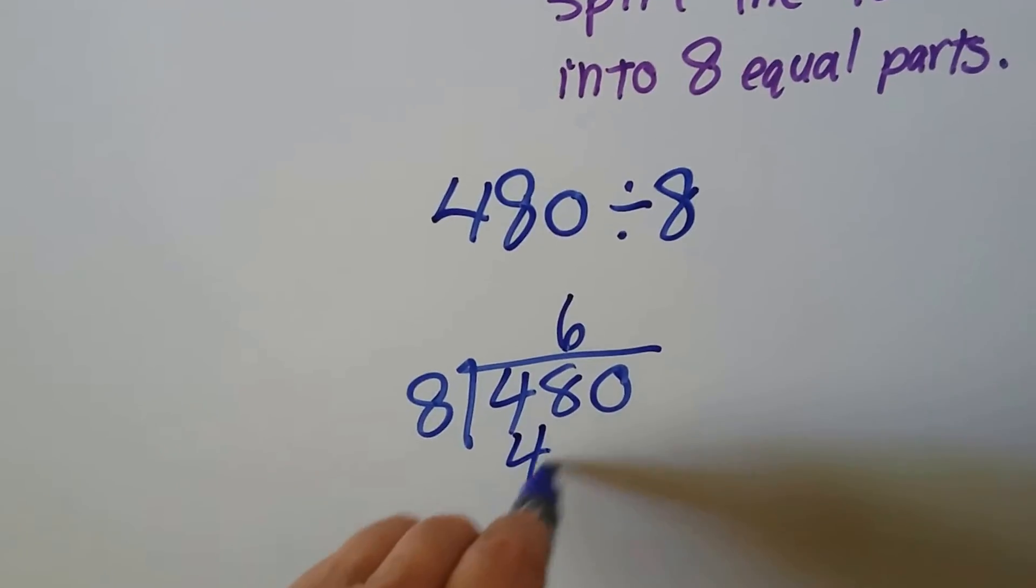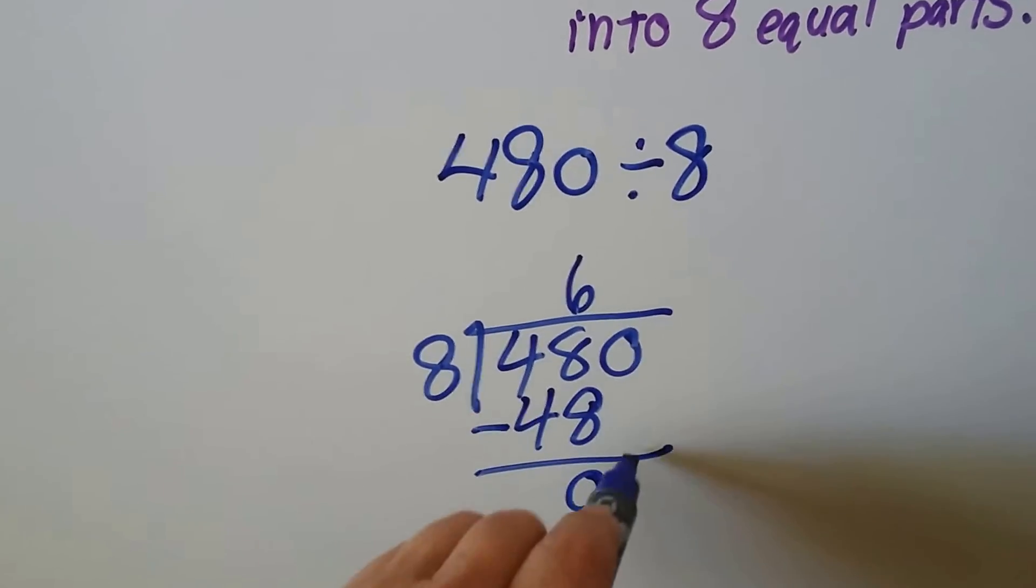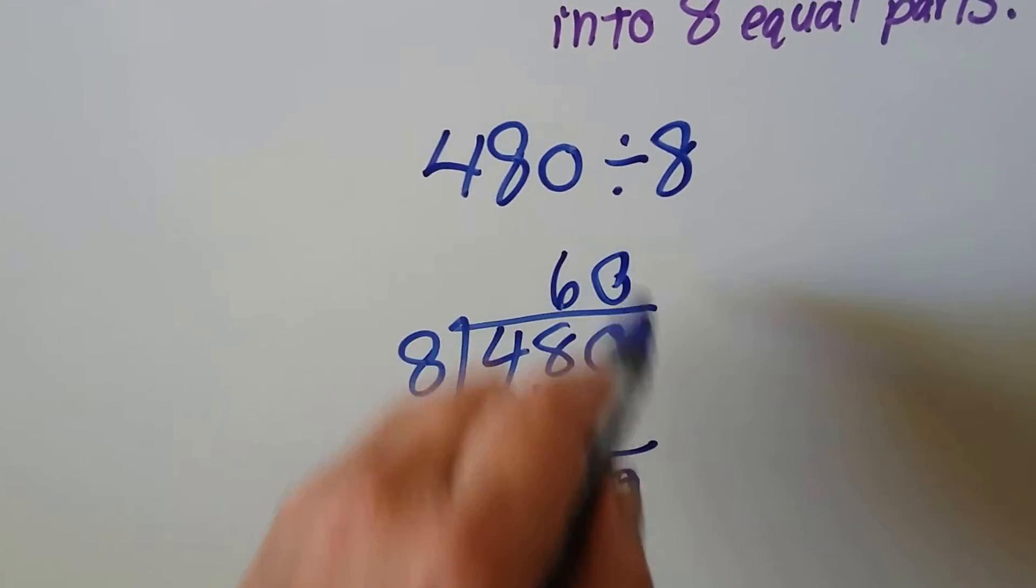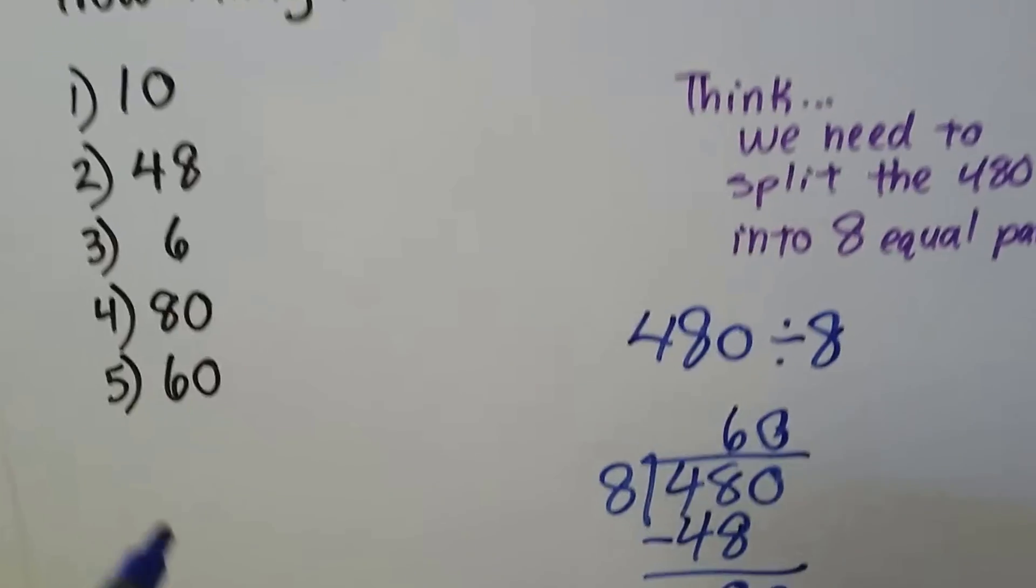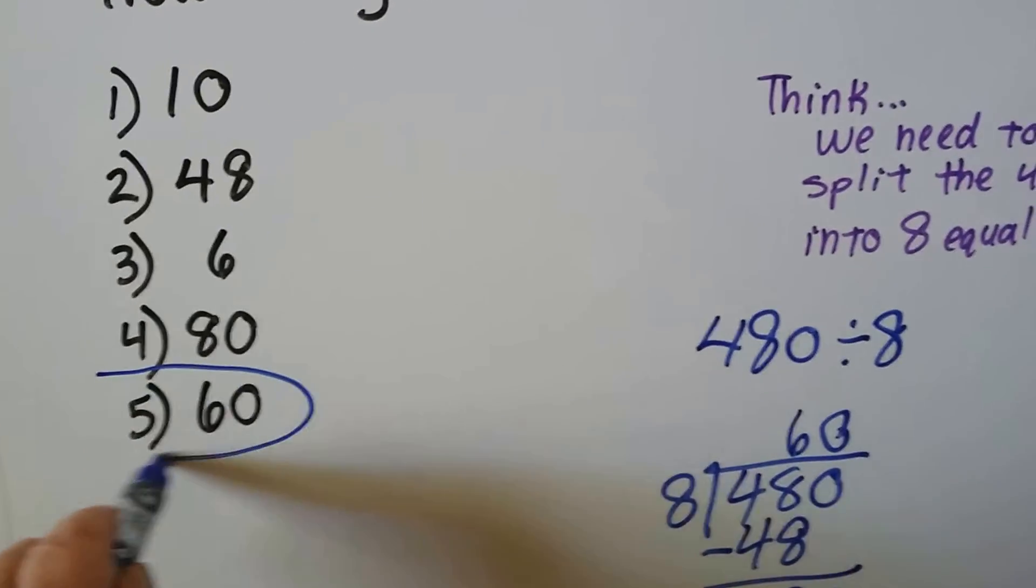Eight times six is 48. We do our subtraction and get zero. And because that's zero, eight goes into zero zero times. Our answer is 60, and we see that number five is the correct one.